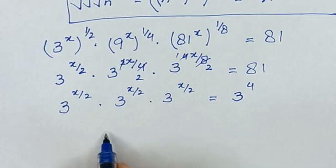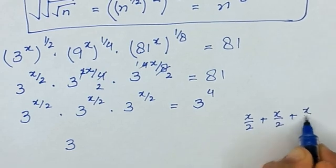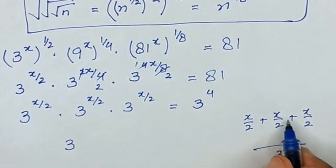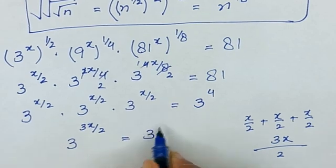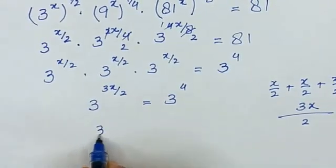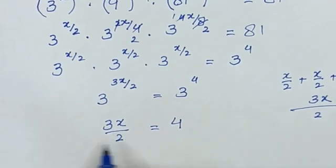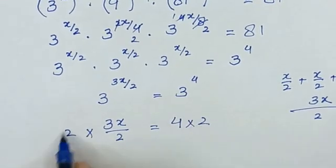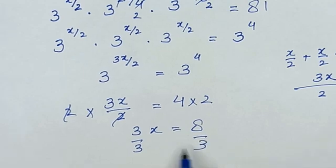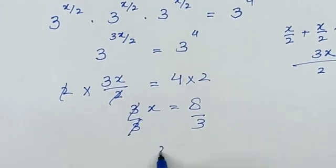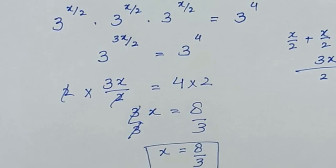Since the bases are the same, we can add the powers. So it becomes x/2 plus x/2 plus x/2, with a common denominator, giving 3x divided by 2, equal to 3 raised to the power 4. Equating the powers: 3x divided by 2 equals 4. Multiplying both sides by 2: 3x equals 8. Dividing both sides by 3: x equals 8 divided by 3.